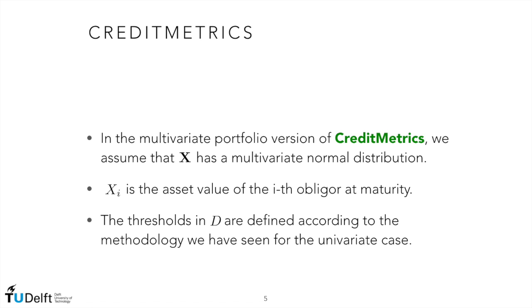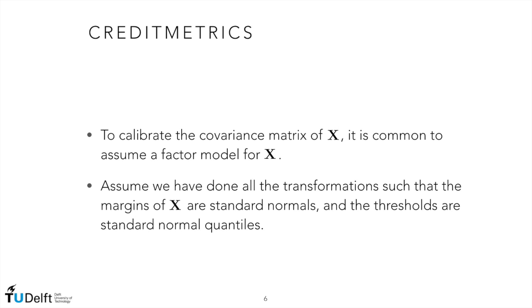In the portfolio version of credit metrics, we assume that x has a multivariate normal distribution. The quantity xi is the asset value of the i-th obligor at maturity. The thresholds in D are defined according to the same methodology we have seen for the univariate case, exactly the same. Notice that we could have used a Gaussian copula and the result would be the same, because of the normal marginals. In other words, it is like we are assuming a Gaussian copula implicitly.